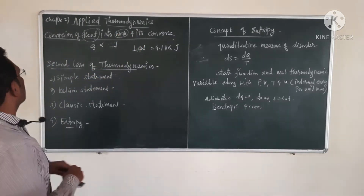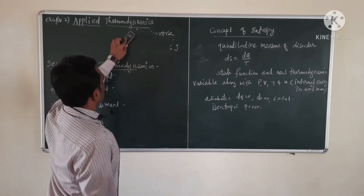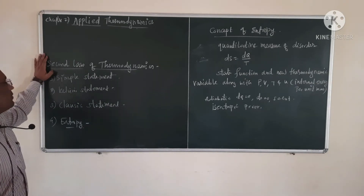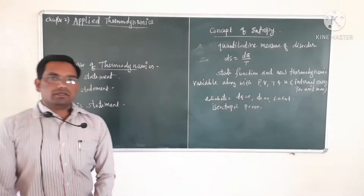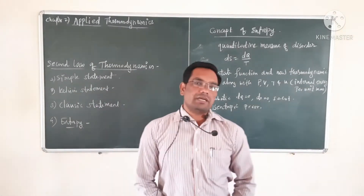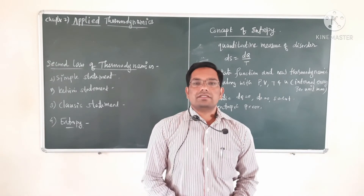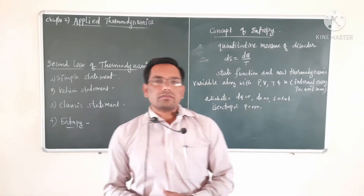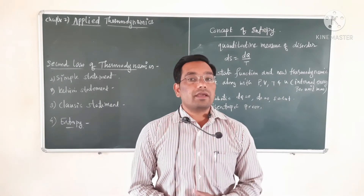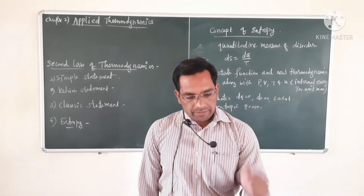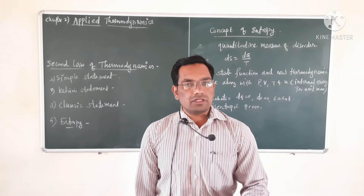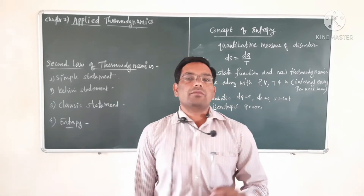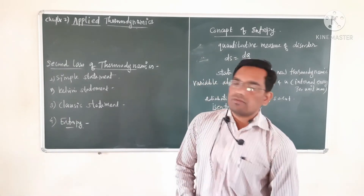We are now moving to the next point, which is the second law of thermodynamics. Before studying the second law, in the previous chapter you already studied the first law of thermodynamics. Recall that: if three systems A, B, and C are in thermal equilibrium with each other, separated by an adiabatic wall, and system A and B are in thermal equilibrium and system B and C are in thermal equilibrium, then system A and system C are in thermal equilibrium with each other.